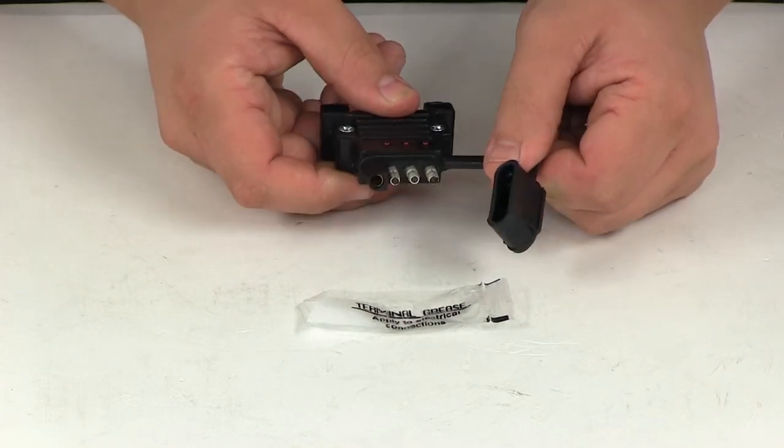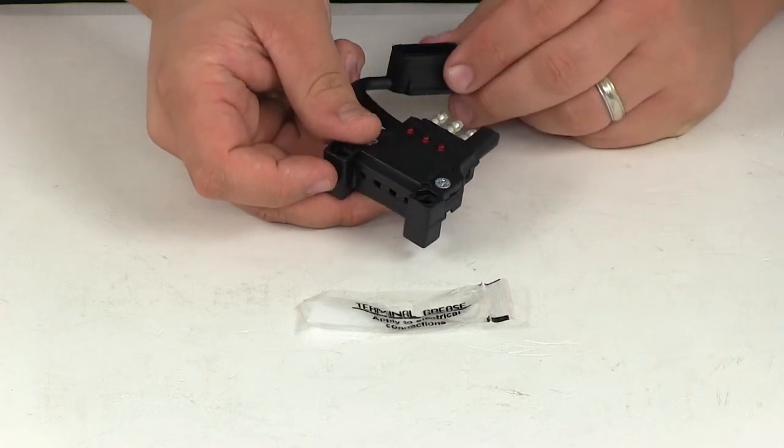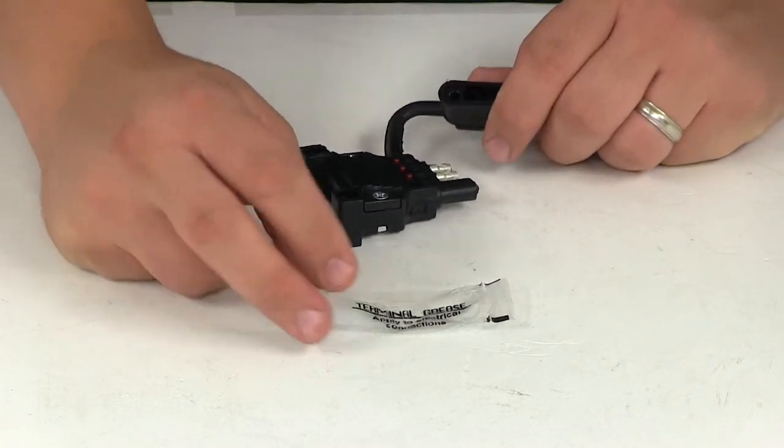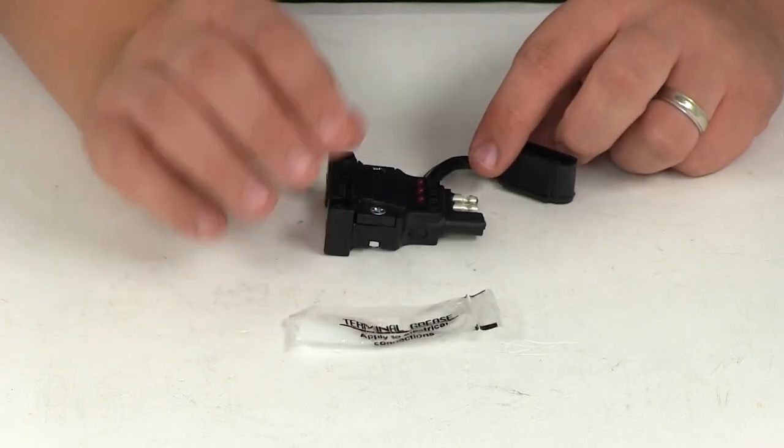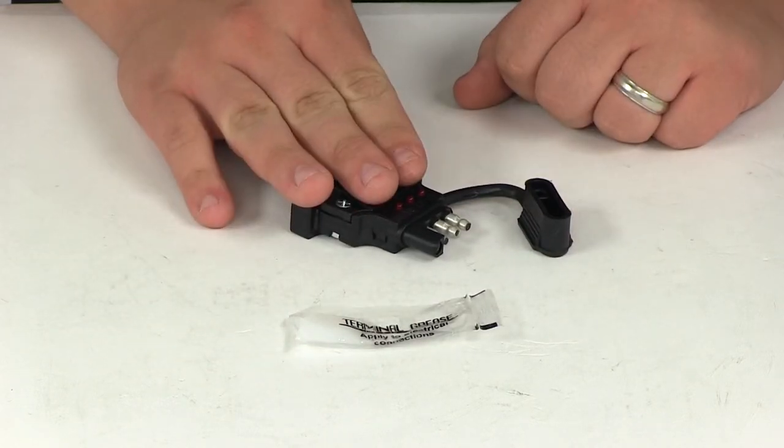This is for use with 18 gauge wires. It can also work with 16 gauge wires and it comes with the terminal grease packet as well as the 4-way flat trailer connector.